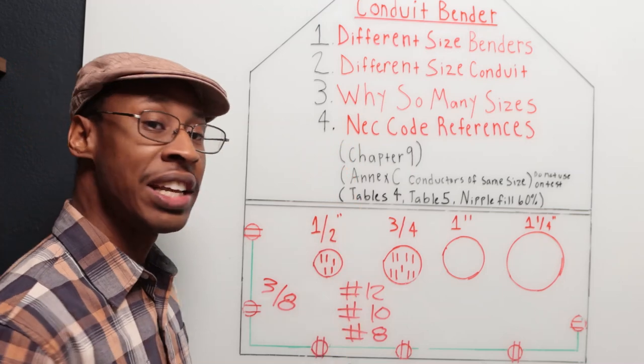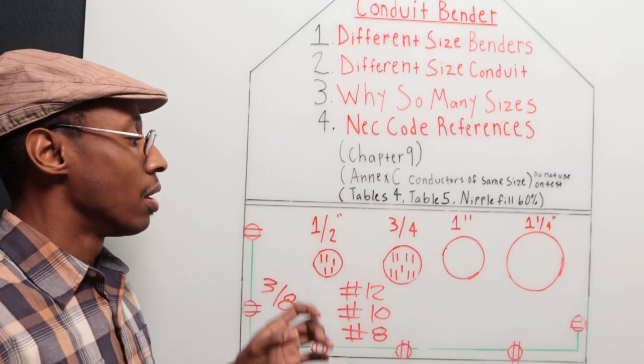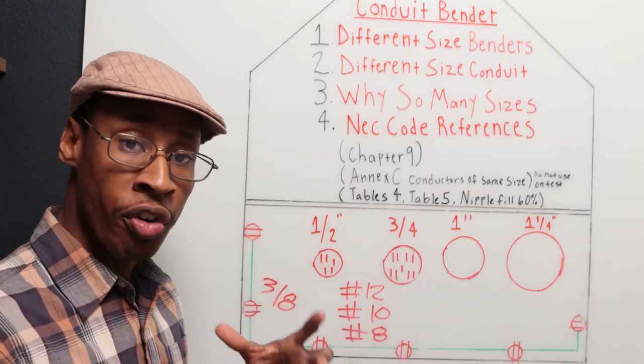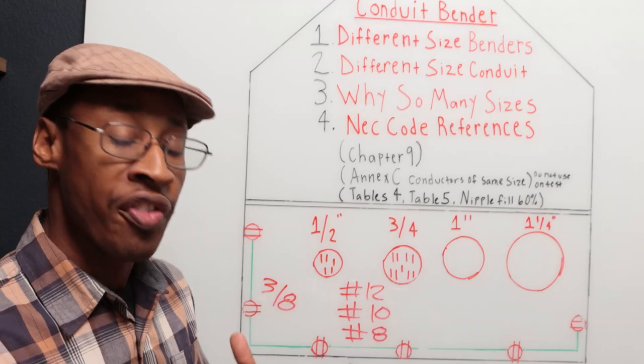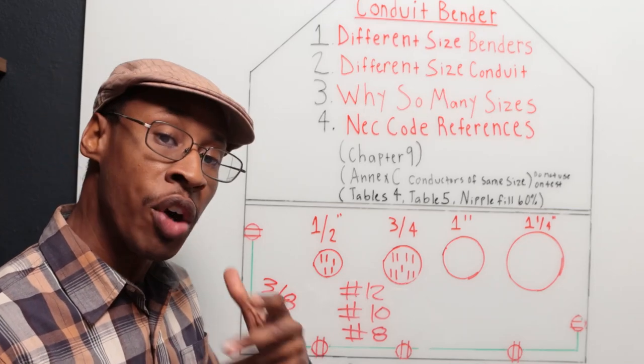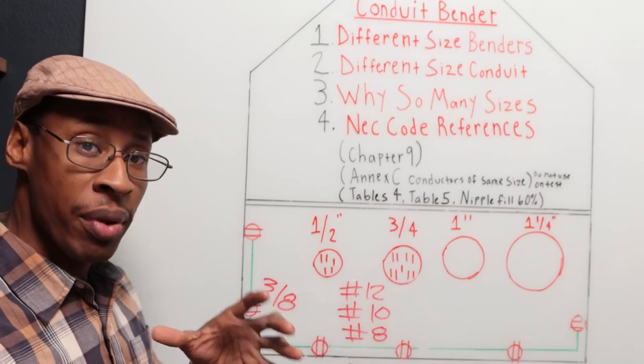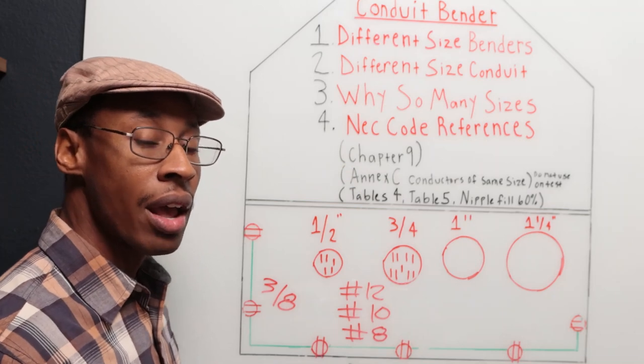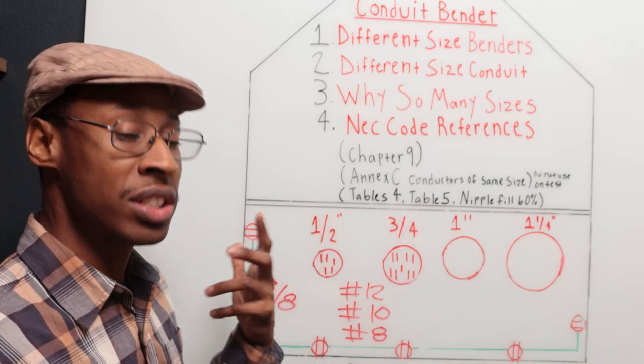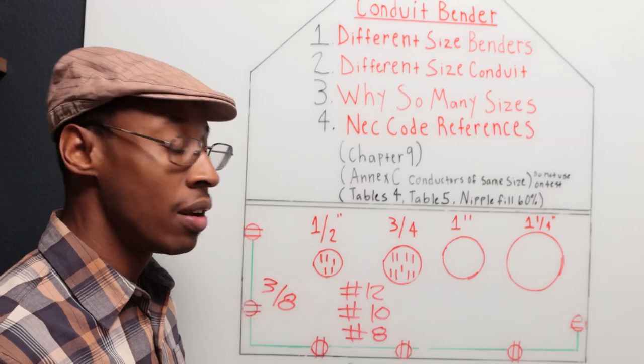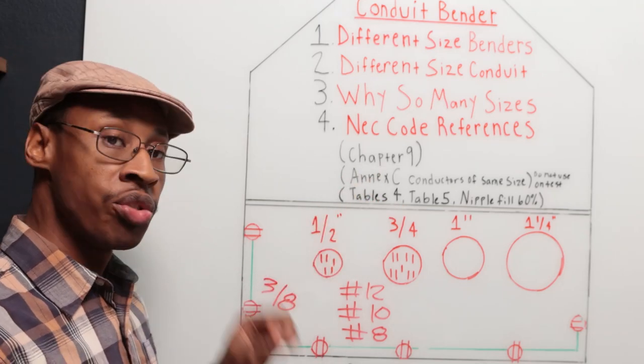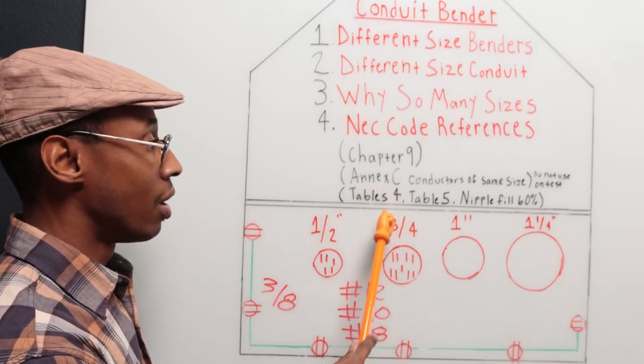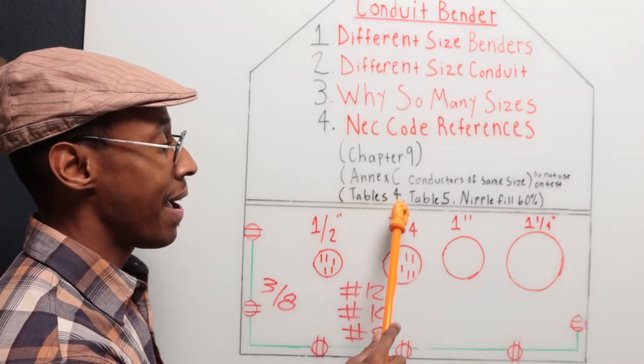So last but not least, we have NEC code references. This is just pertaining to what we've talked about today. If you want to do a little bit more further reading, you can go to Google. Or if you have a code book, let me back up. If you don't have a code book, type in NEC chapter nine. And you can begin to read and understand some of the things that I shared with you today. So chapter nine is going to let you know what NEC is about. And also too, it's going to let you know what tables four and five.